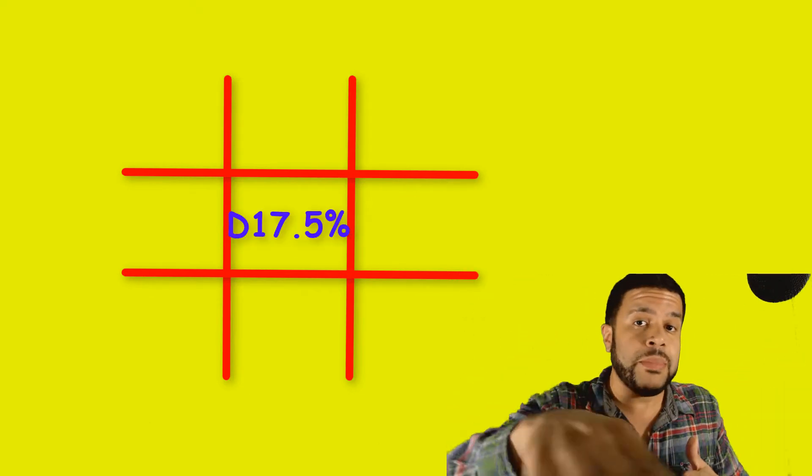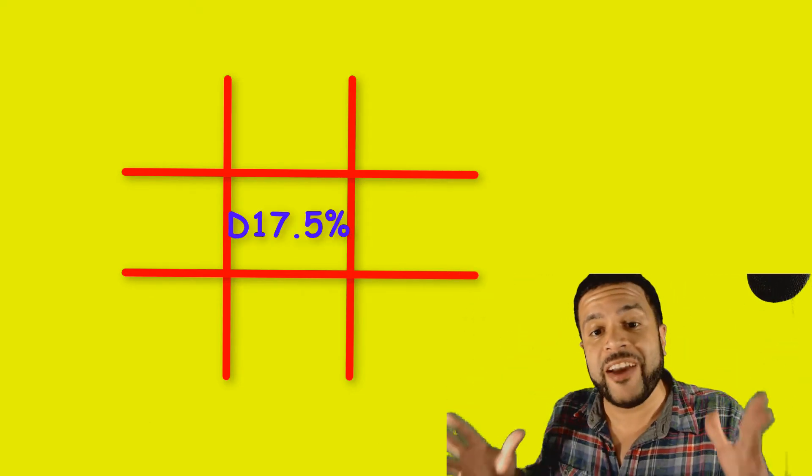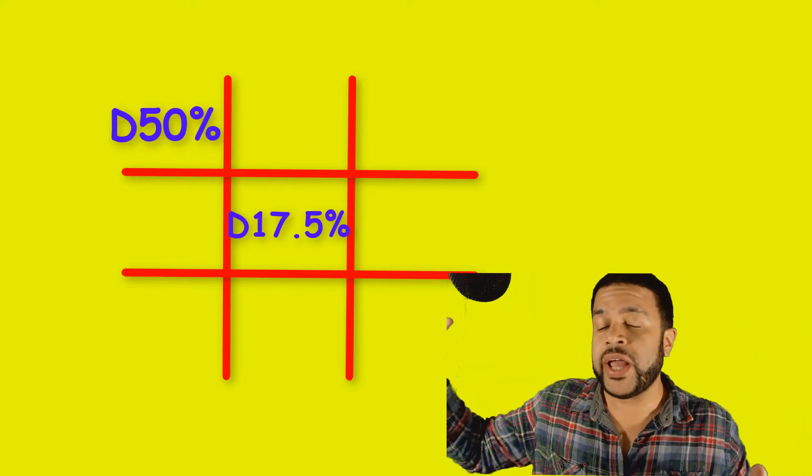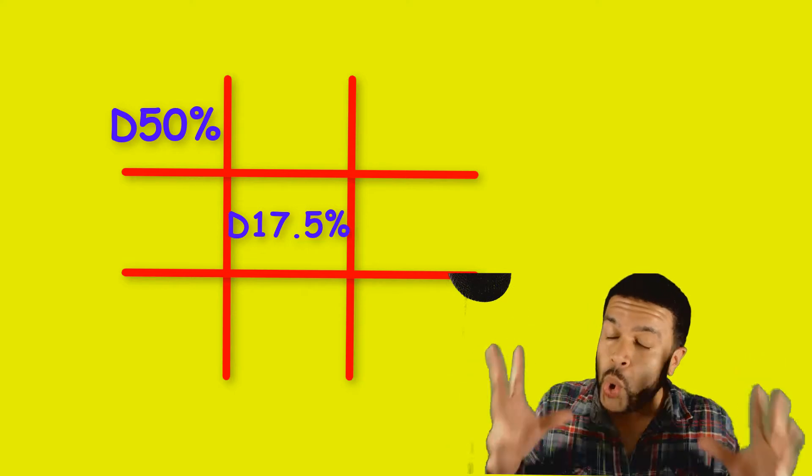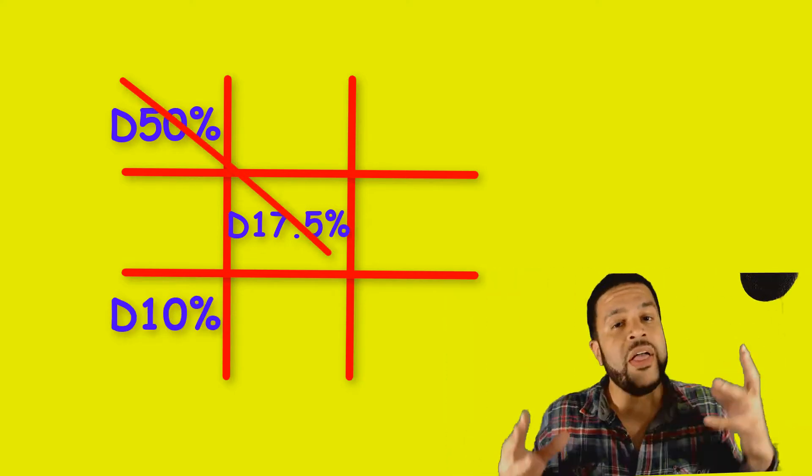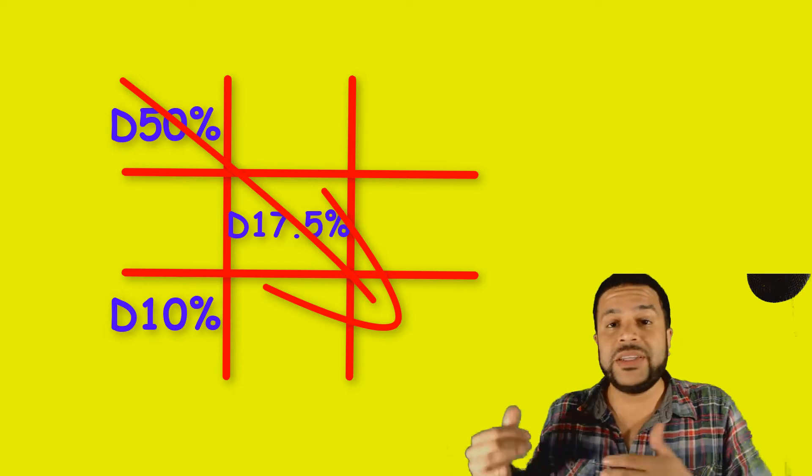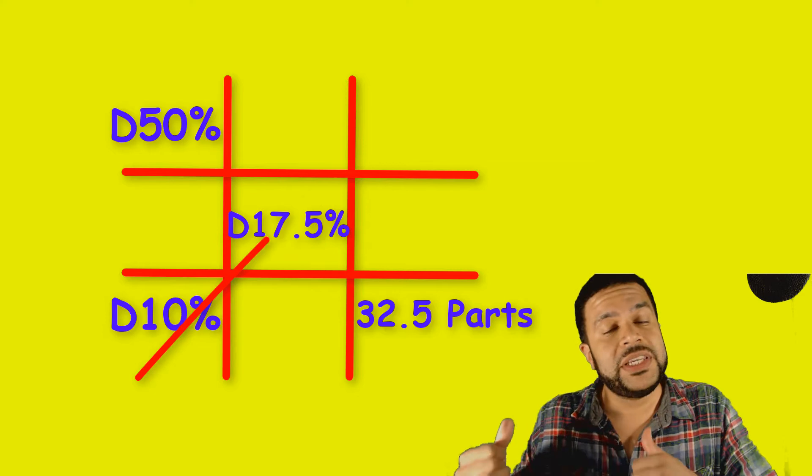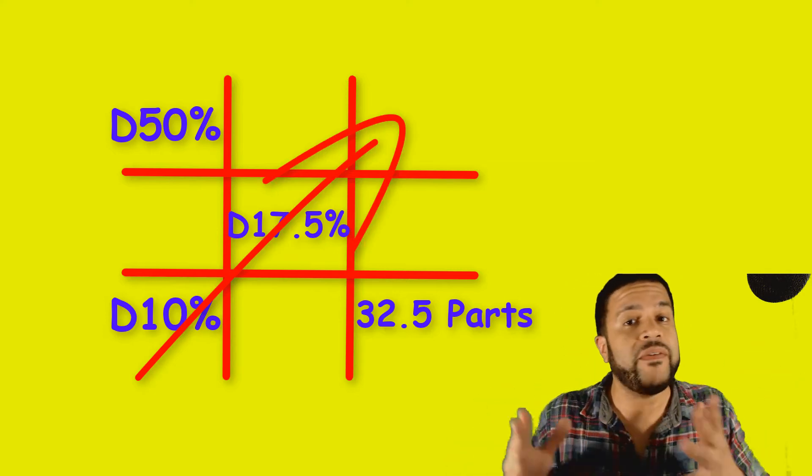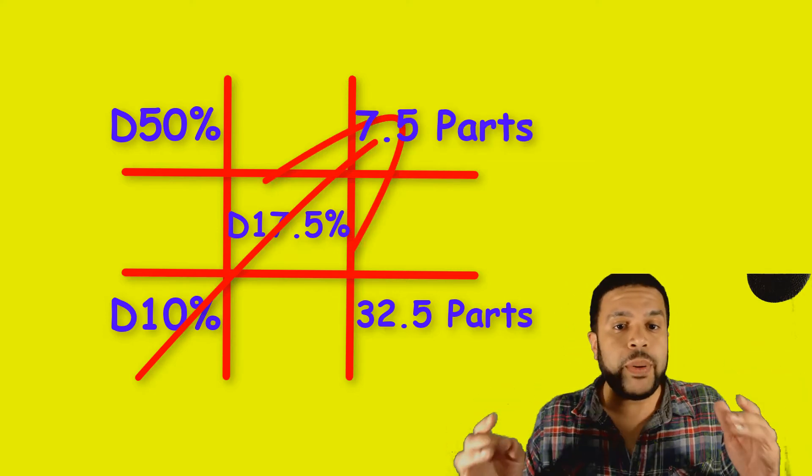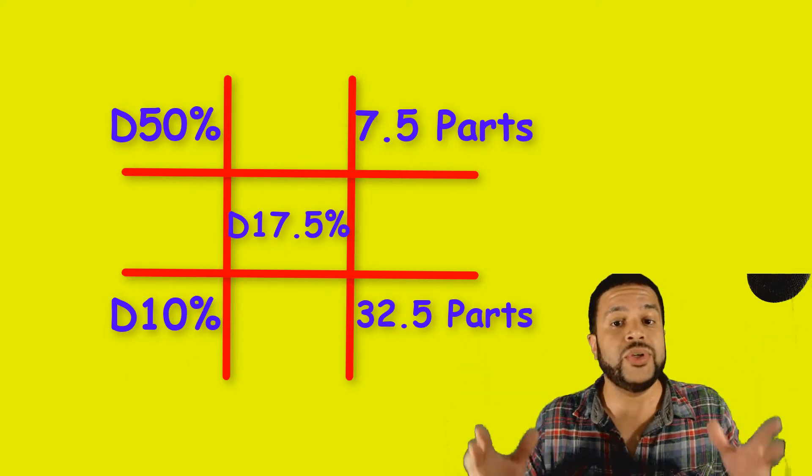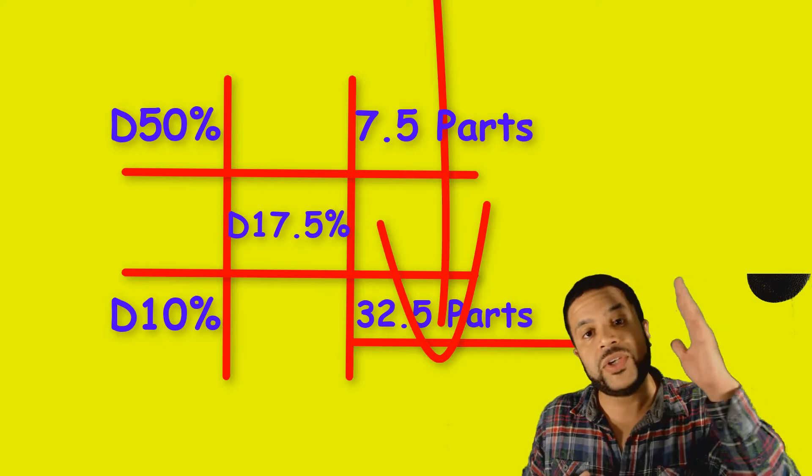So let's start off with a nice tic-tac-toe win. The first step is you've got to put what you need in the middle. So Dextrose 17.5%. After that, you want to use your ingredients. So on the top left-hand corner is Dextrose 50% and under that is going to be Dextrose 10%. You always put the higher concentration on the top left-hand corner. Then we've got to cross-subtract. 50 minus 17.5 is going to give you 32.5 parts. Then you want to take 10 minus 17.5 and it's going to give you 7.5 parts. Now these parts are telling you how many parts of each individual ingredient you need. But you have to add these total parts. So 7.5 plus 32.5 gives you your 40 parts.